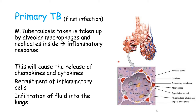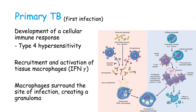This will cause the release of neutrophil chemoattractants and cytokines, resulting in the recruitment of inflammatory cells. So you have an infiltration of fluid into the lungs, this fluid containing white blood cells. There will be a development of a cellular immune response, because Mycobacterium tuberculosis is an intracellular organism.